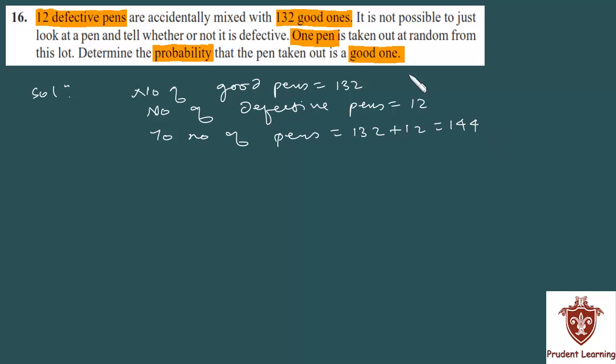So total number of pens - what is your total number of possible outcomes? The total number is always our total number of possible outcomes. Now, when you take one pen out, and that one pen is a good one - this is given in the question. So the number of good pens will be the number of favorable outcomes. The number of good pens is 132, so this will be your number of favorable outcomes.